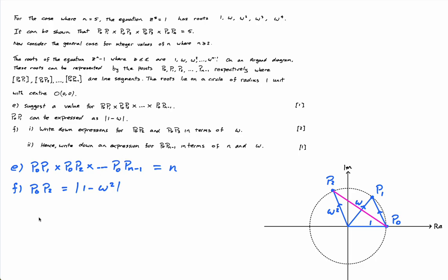And then p0 p3, p0 p3 is going to be the magnitude of 1 minus omega cubed. Same reason.